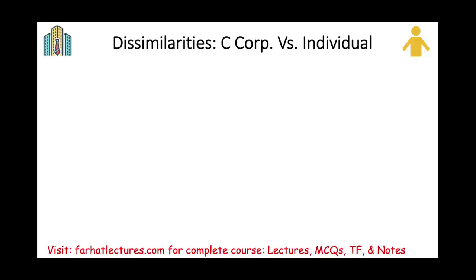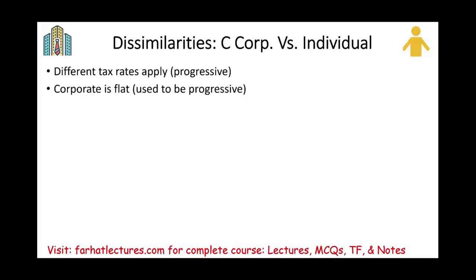Now let's look at the differences. First, the tax rate: for individuals it is progressive, while for corporations it is a flat rate. The Tax Cuts and Jobs Act of 2017 changed the corporate rate to a flat 21%. In the future this could change, since tax law can be revised with each election cycle.